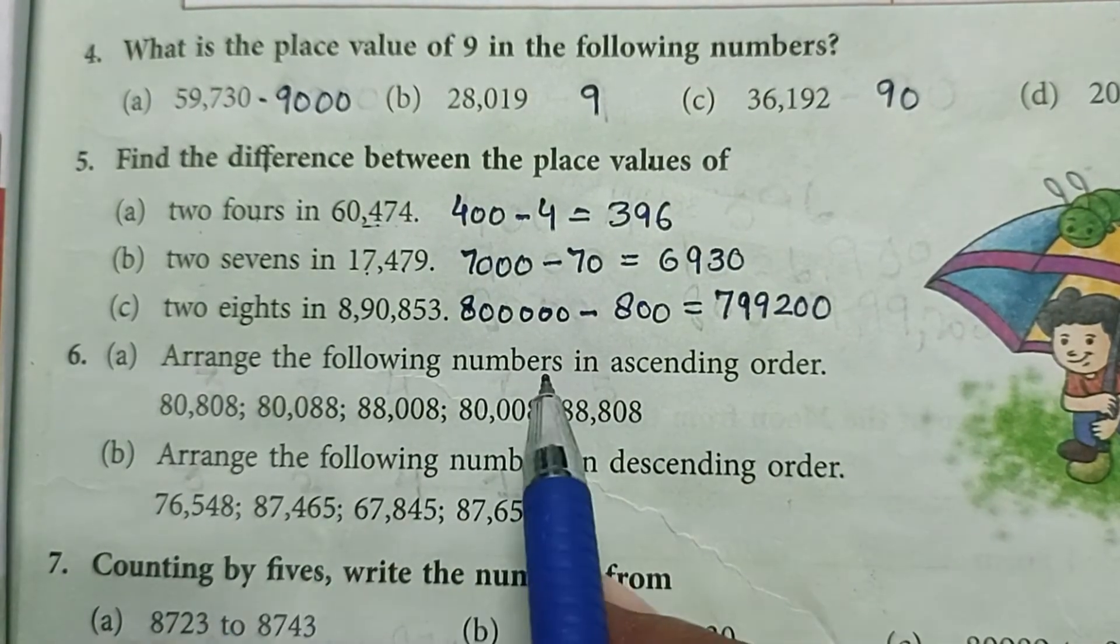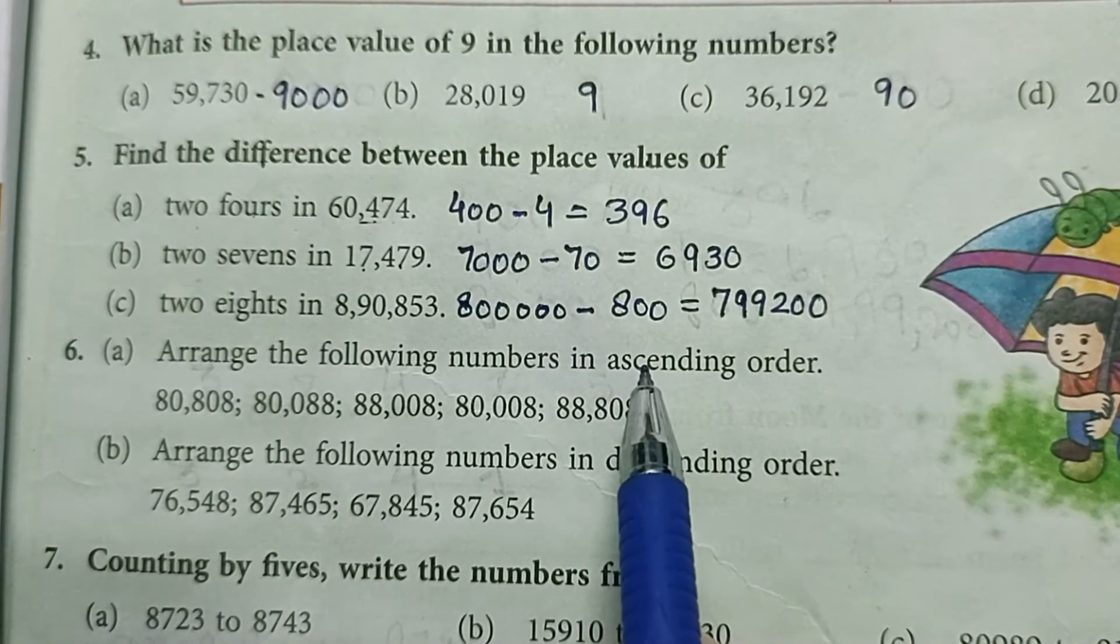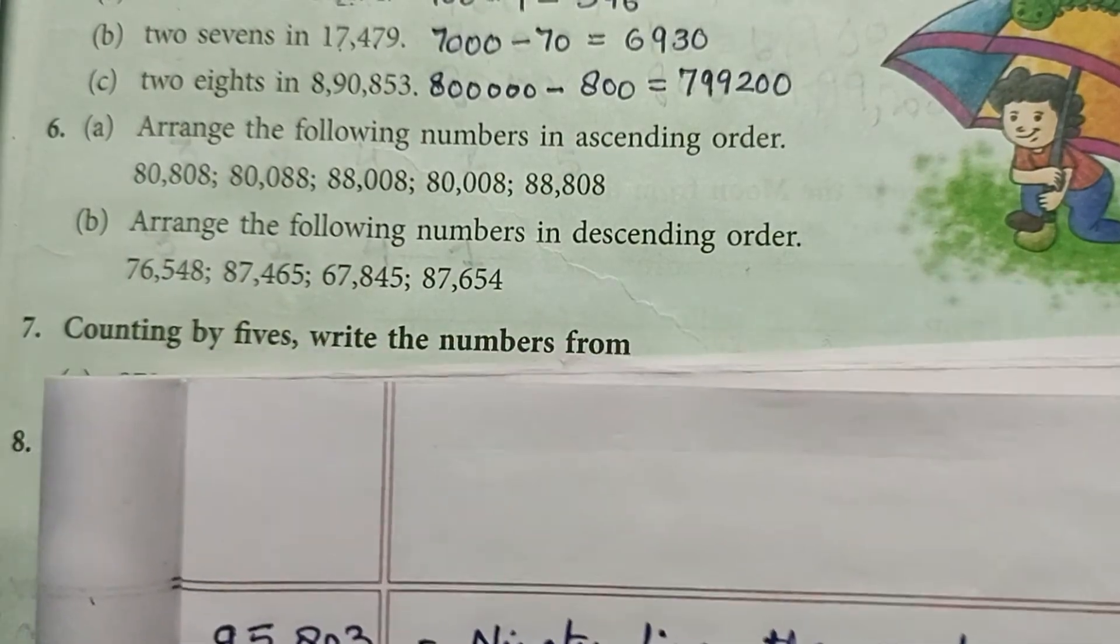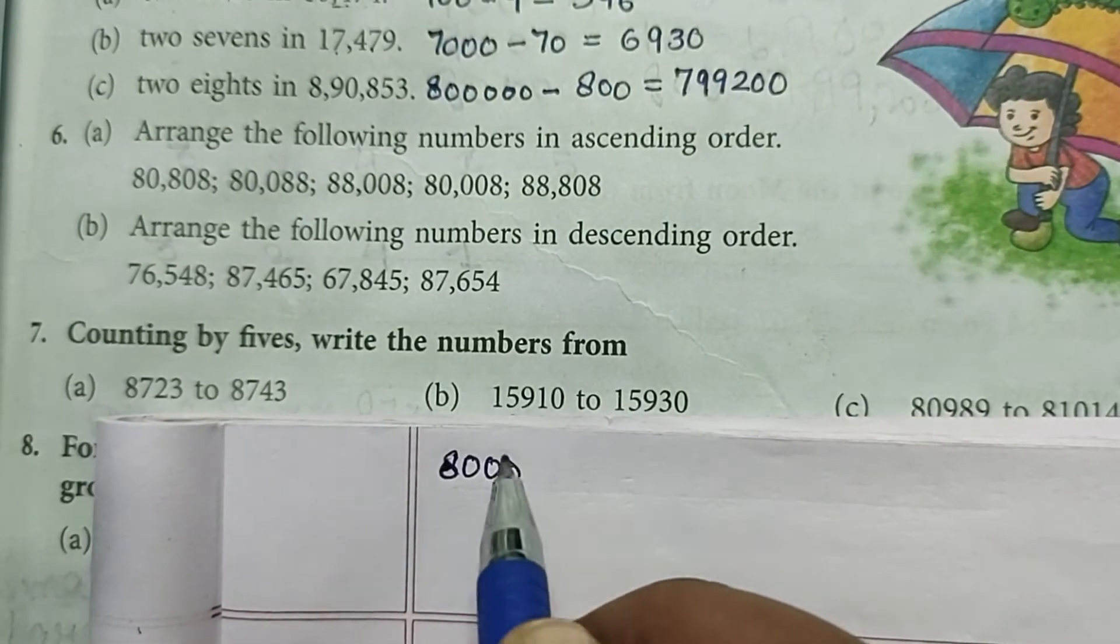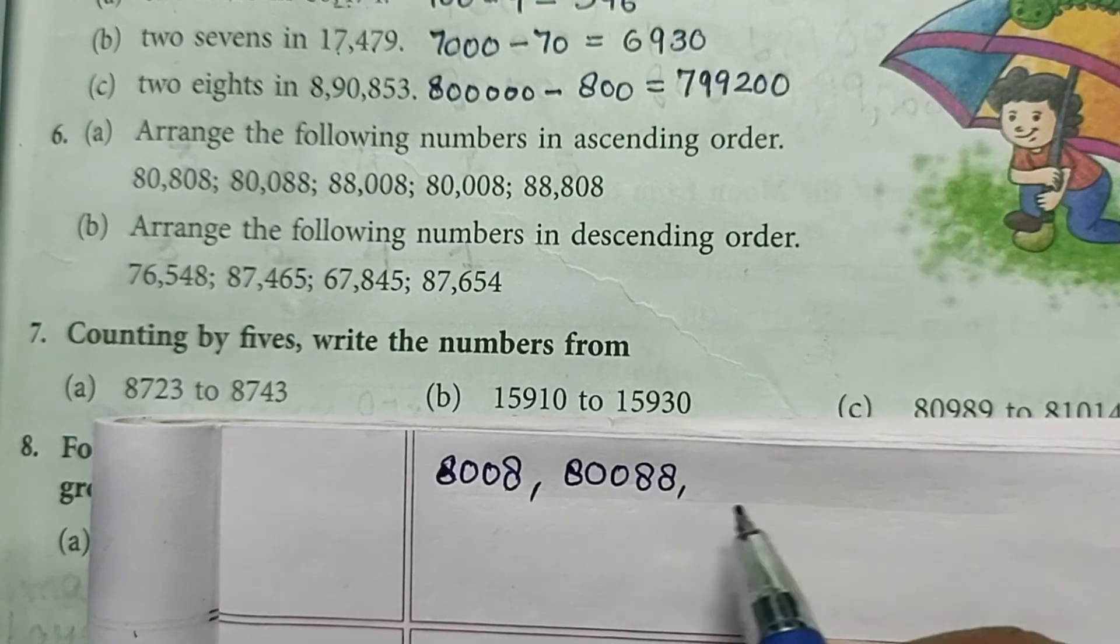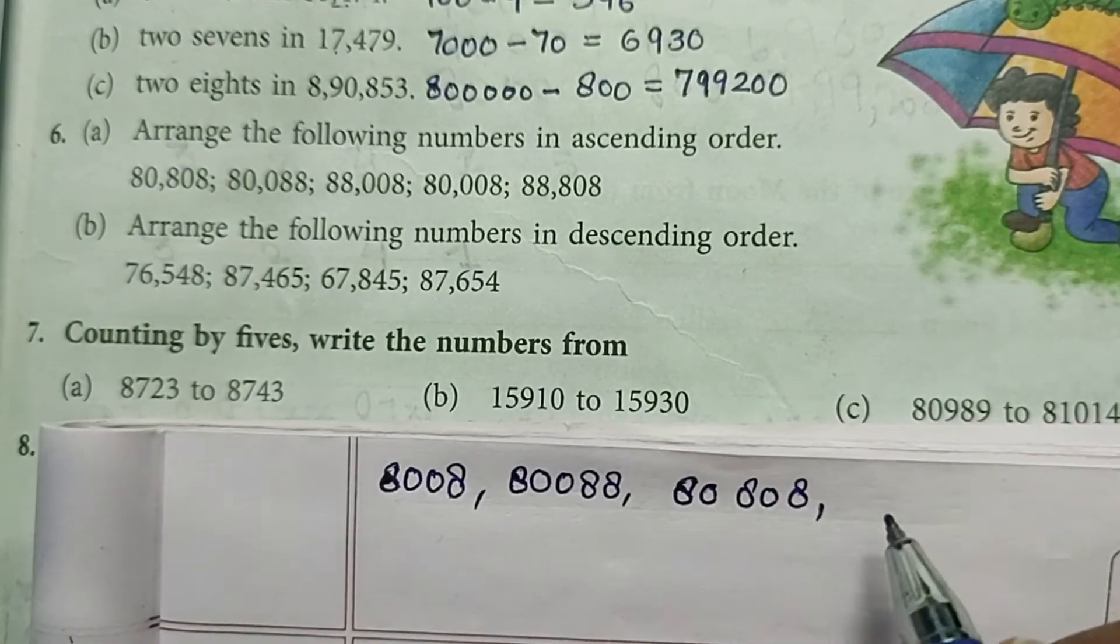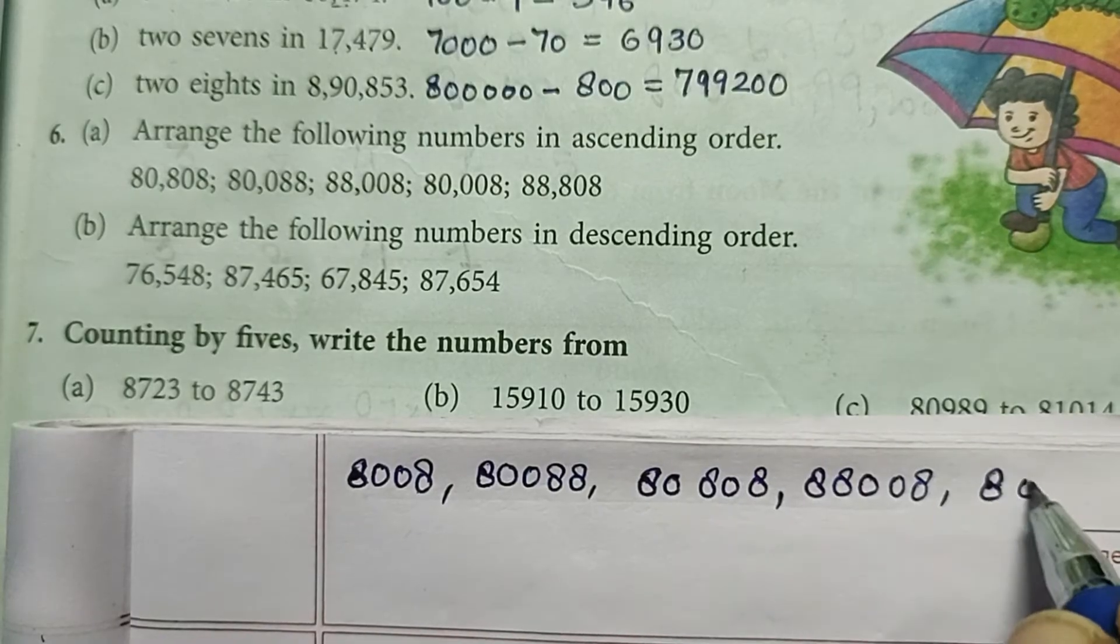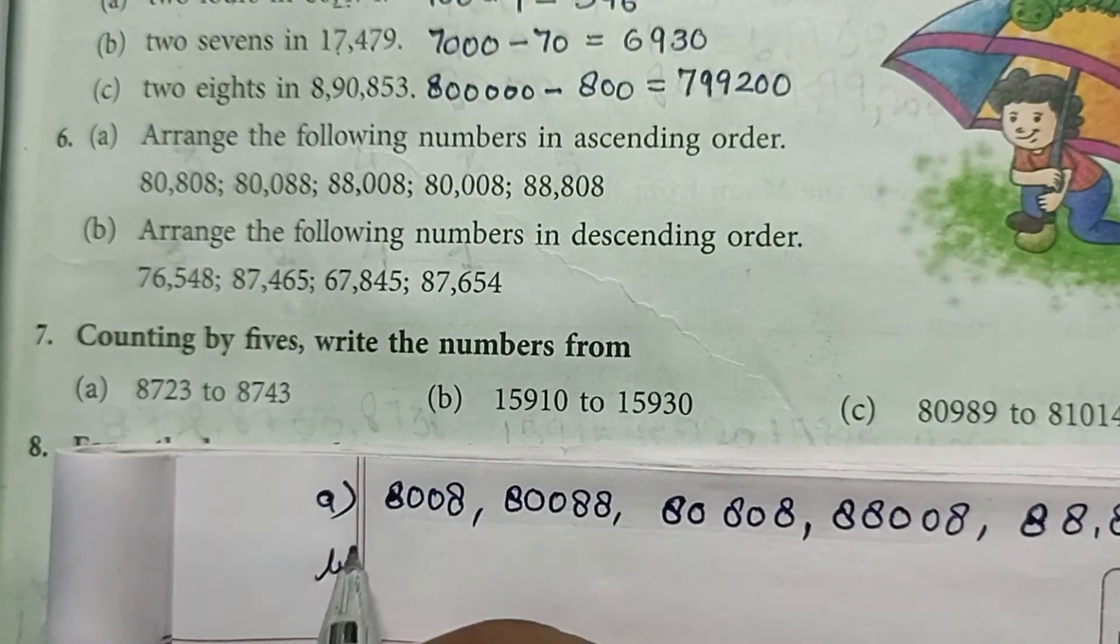Now arrange the following numbers in ascending order. We have to arrange these numbers in ascending order, which means from smallest to greatest. So carefully looking at these numbers: 80,008, then 80,088, then 80,808, then 88,008, and 88,808.